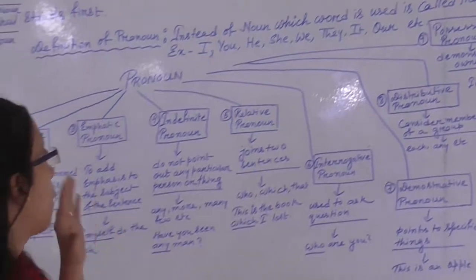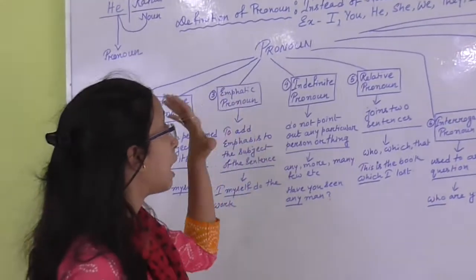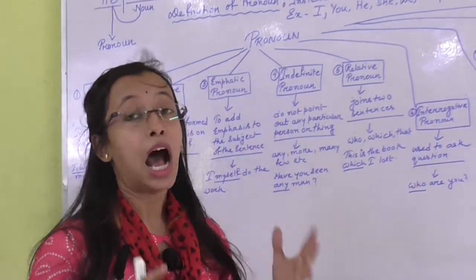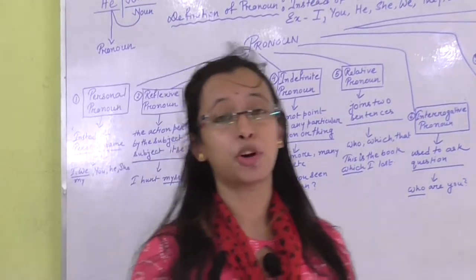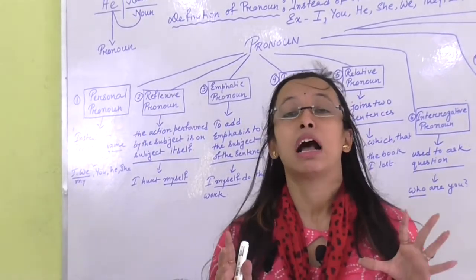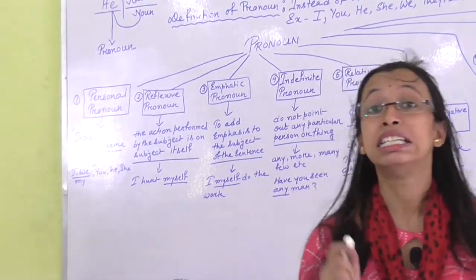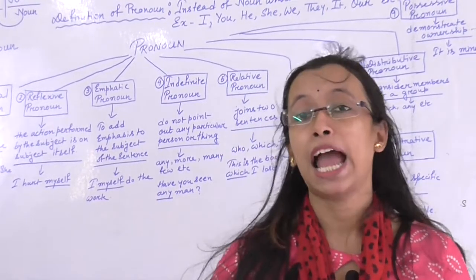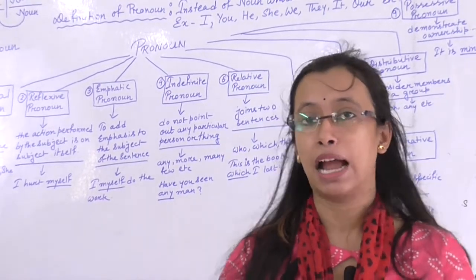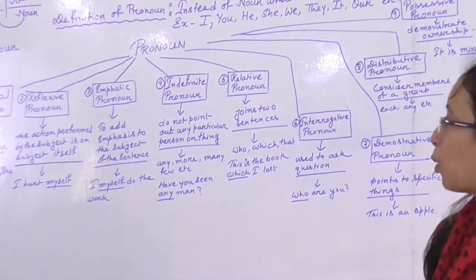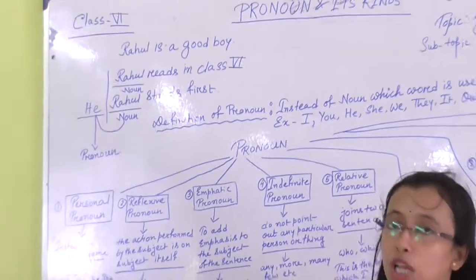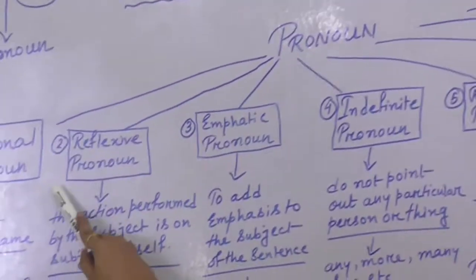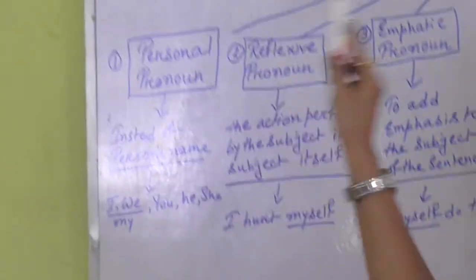Now we come to the kinds of pronoun. How many kinds of pronoun are there? Pronouns are of nine kinds.